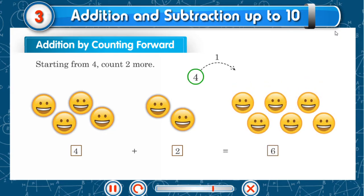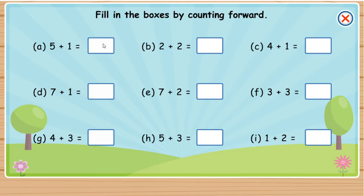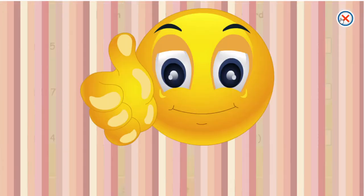4 plus 1 is 5, and 4 plus 2 is 6. 5 plus 1 is equal to 6. Fill in the boxes by counting forward. 6 plus 1 is equal to 7. 7 plus 1 is equal to 8.